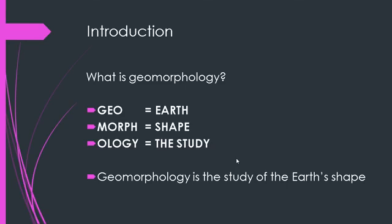What is geomorphology? Let's break the term into three parts: 'Geo' deals with the earth, 'Morph' refers to shape, and 'Ology' refers to the study. So in short, geomorphology is the study of the earth's shape.